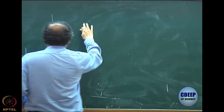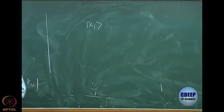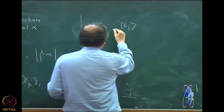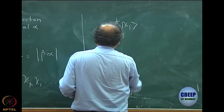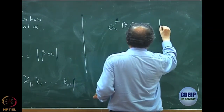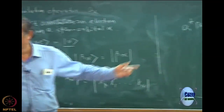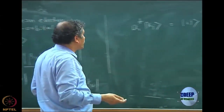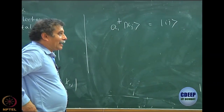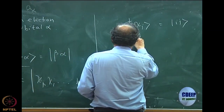Let us analyze this operator. Assume I have a state |χⱼ〉 — a one-electron state where χⱼ is there. I define a†_i |χⱼ〉 where i ≠ j, and I get a state |ij〉, meaning |χᵢχⱼ〉. Now I want to understand what is the adjoint of this state. The adjoint will be 〈χⱼ| (a†_i)†.